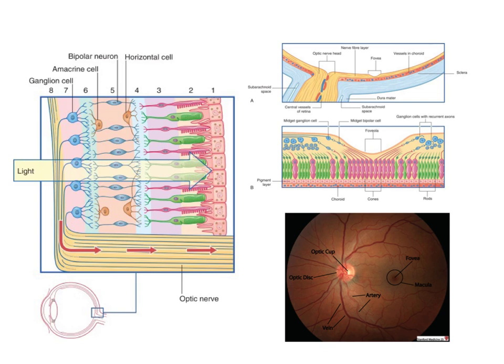A few things to point out before we talk about the layers of the retina in detail. Firstly, you need to appreciate that the vertebrate retina — specifically the mammalian retina we're looking at — is back to front. So light enters the retina and first has to pass through axons, then some other neuronal cells, and then lots of other bits and pieces before it eventually is able to interact with the photoreceptors. So the vertebrate retina is back to front.